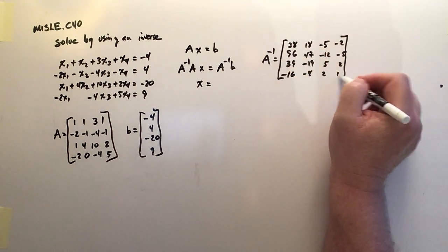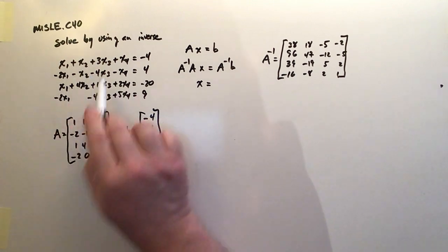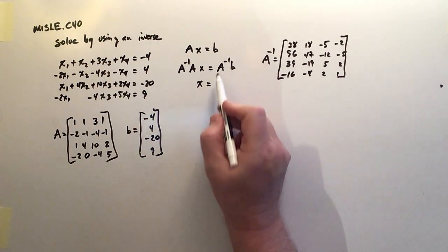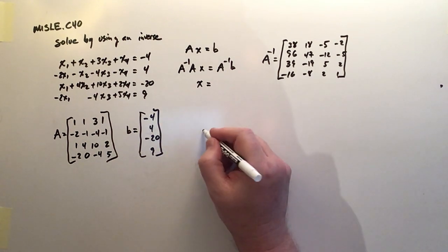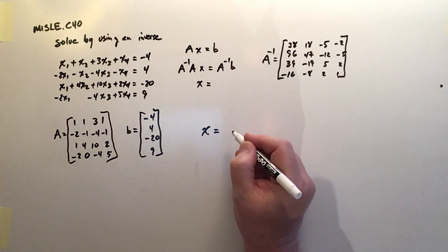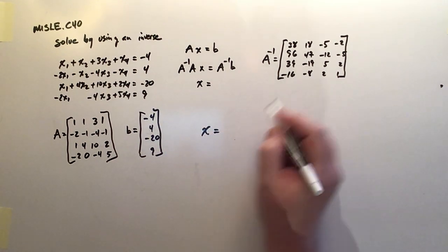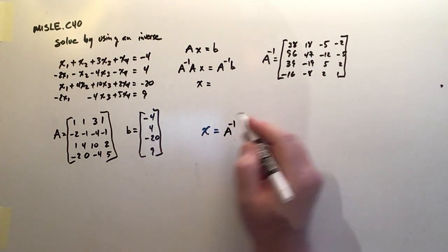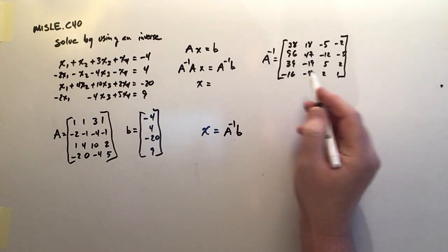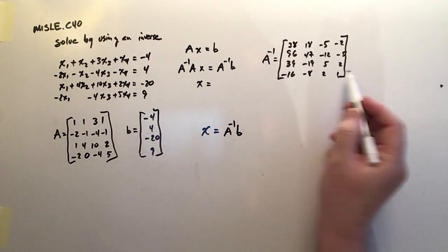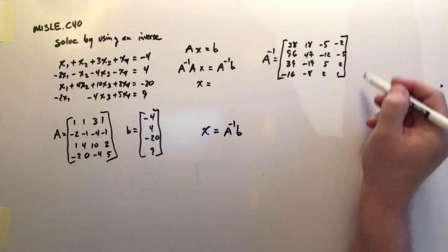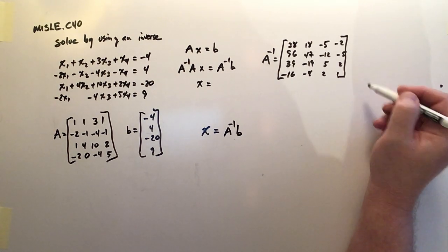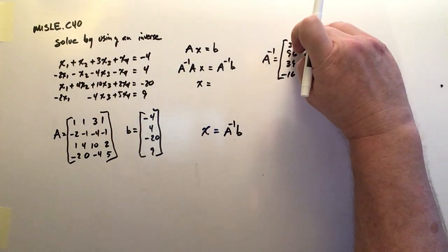So that's the inverse matrix from this original coefficient matrix, which means I should now be able to take that times the solution matrix and get my answer X. So X should be equal to this guy, A minus 1, and when I take this guy times this, remember,